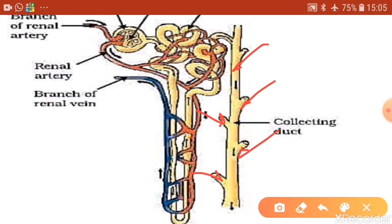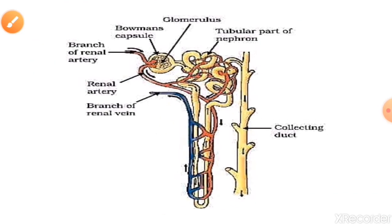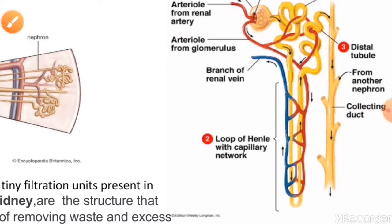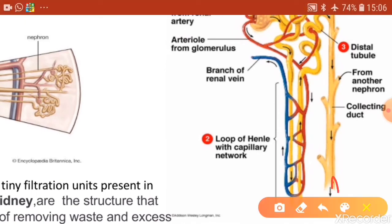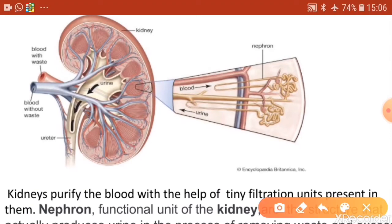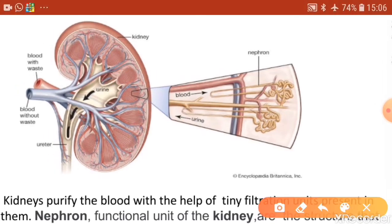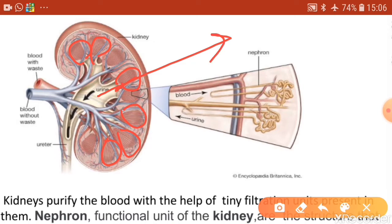The collecting ducts open into pyramidal structures in the kidney called renal pyramids, which are a collection of collecting ducts. These renal pyramids open into the pelvis of the kidney, and from there urine is taken into the ureter.